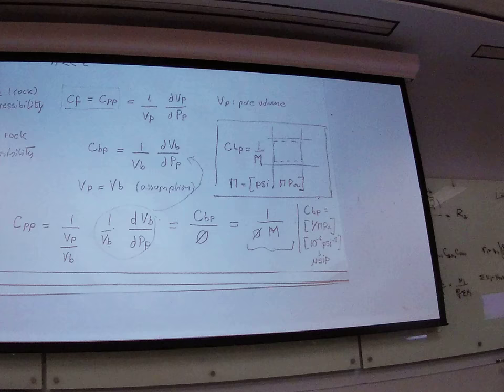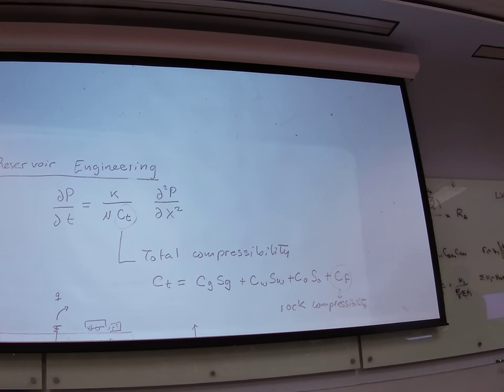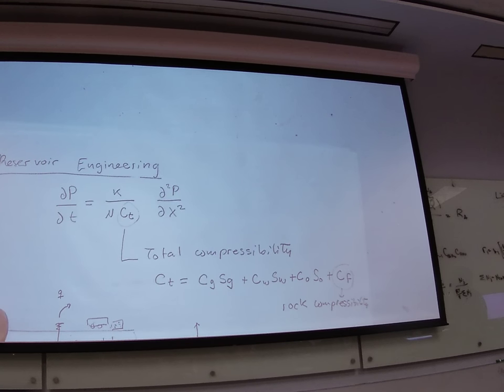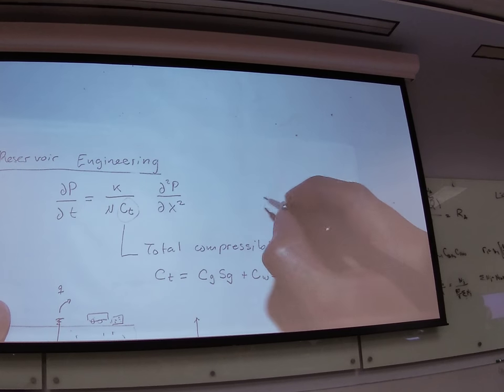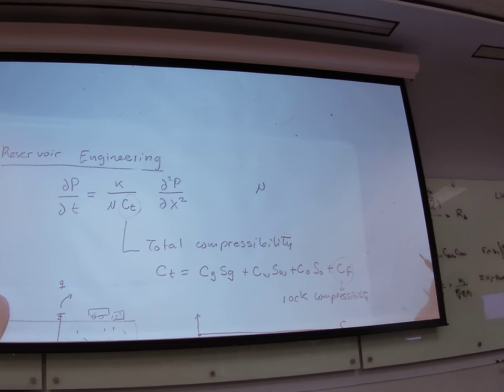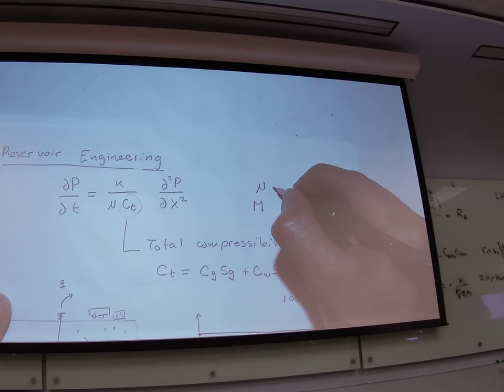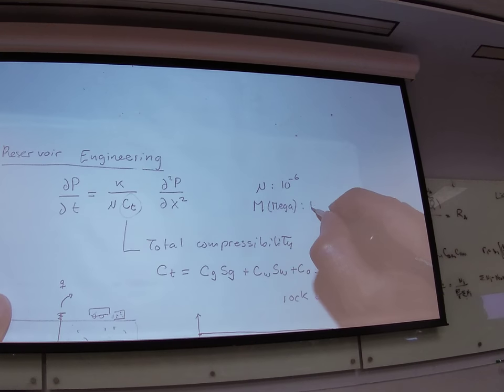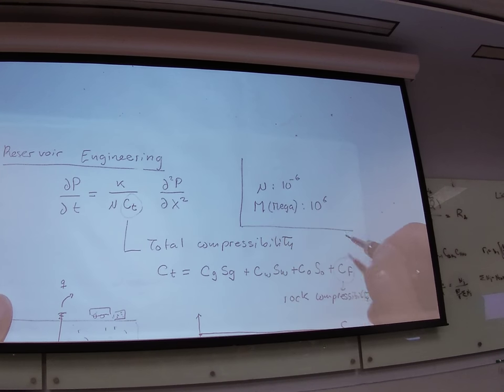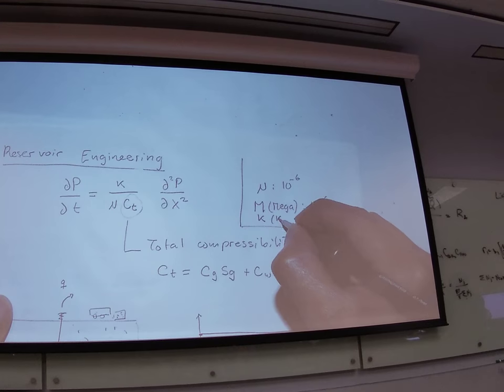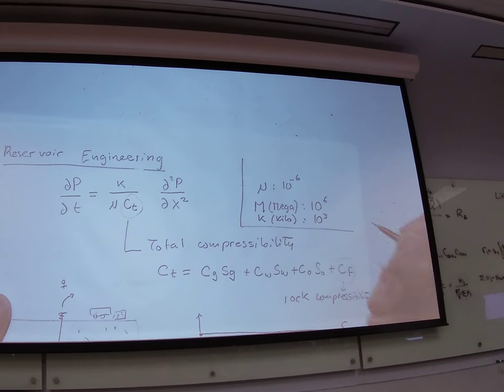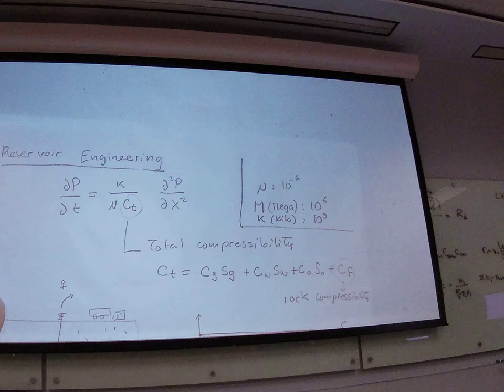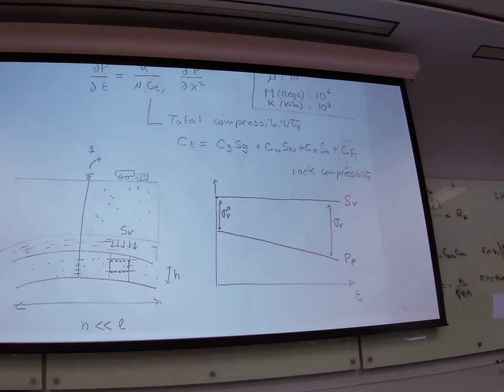I noticed that in exams, in past occasions, I always have people asking me what is micro, what is omega, and things like that. Remember, micro is 10 to the minus 6. M for mega, as in megapascals, is 10 to the 6. K, as in kilo, is 10 to the 3.